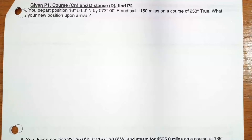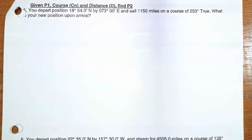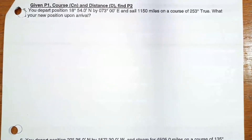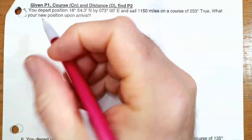In this video, we'll solve a problem. This is number five from the handout packet. We'll start by drawing our navigation triangle, and then we'll go to Bowditch to figure out what formulas we need. The first thing I'm going to do is draw my detailed navigation triangle, and we'll get going from there.